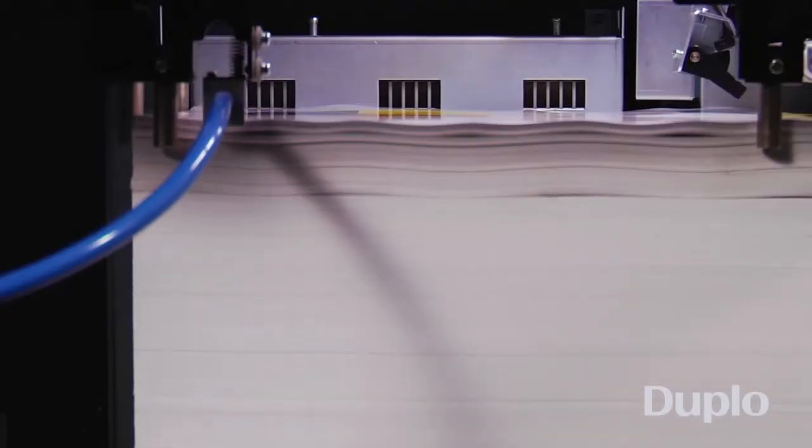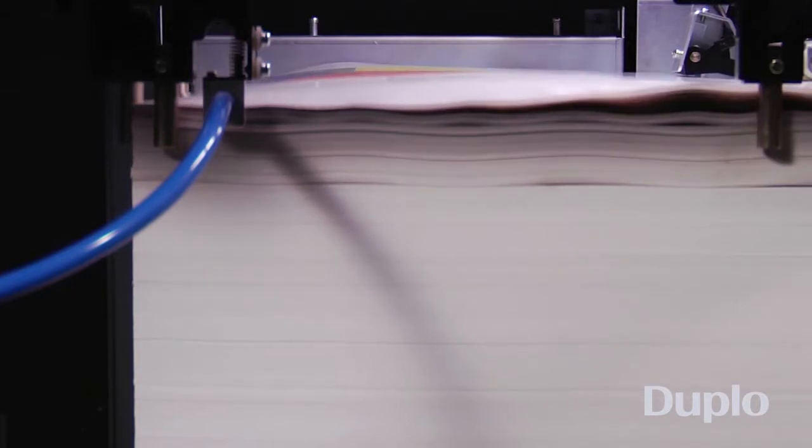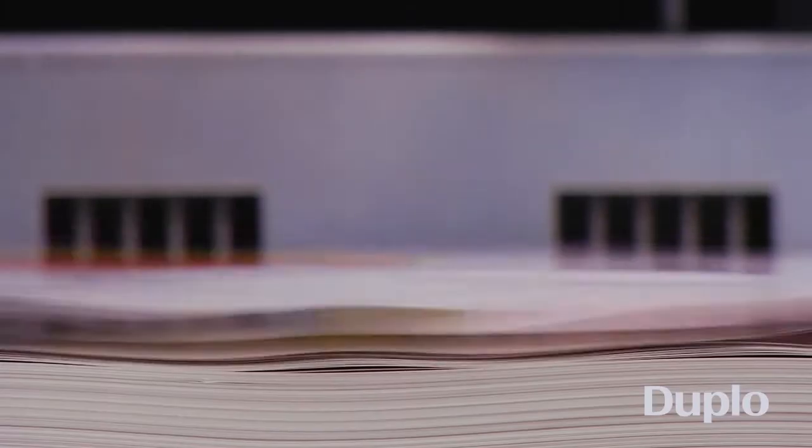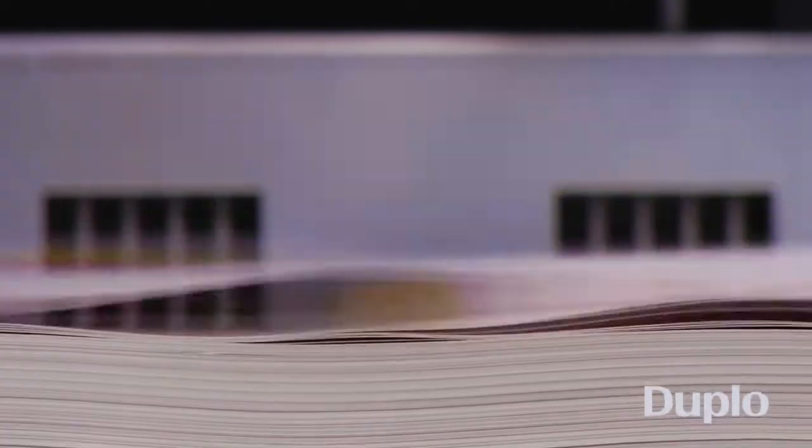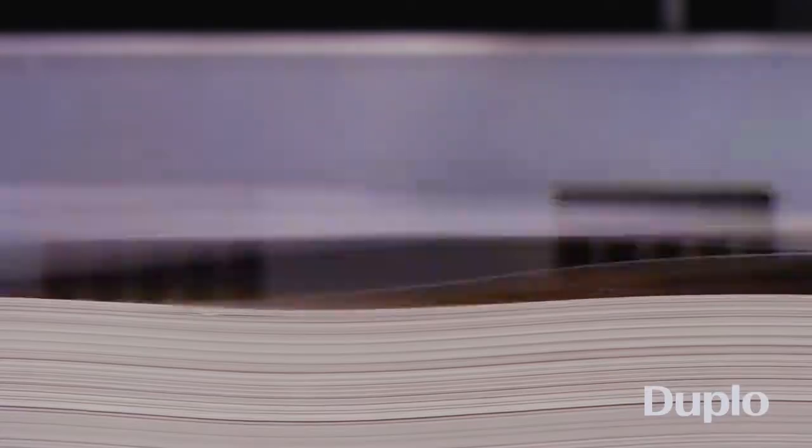After the pile is lifted into position, air is forced into the three sides of the stack from eight different points, generating superior sheet separation even for high static digital stacks, before being picked up and fed by Duplo's own belt suction feed system.